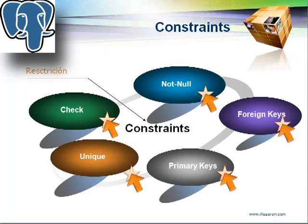Una clave foránea o clave externa es un campo o campos que señala la clave primaria de otra tabla. El propósito de la clave externa es asegurar la integridad referencial de los datos — solo permite los datos que se esperan en la base de datos. Si se agrega un ID de panadería que no existe, no se va a agregar ese elemento.